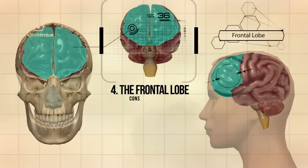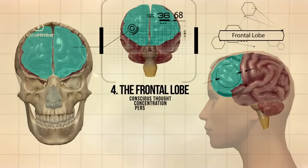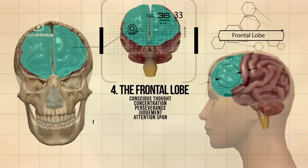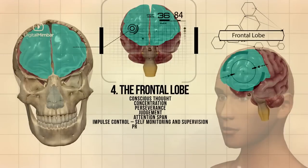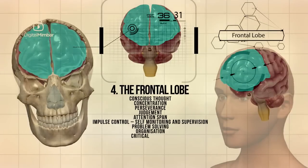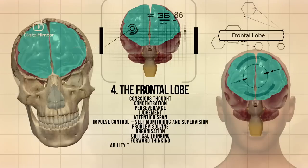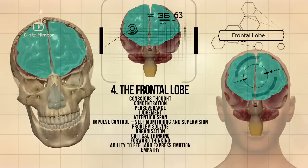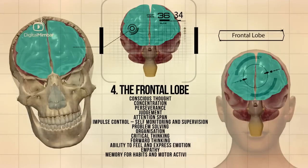And then there's the frontal lobe, which is responsible for conscious thought, concentration, perseverance, judgment, attention span, impulse control (which is self-monitoring and supervision), problem-solving, organization, critical thinking, forward thinking, ability to feel and express emotion, empathy, and memory for habits and motor activities.